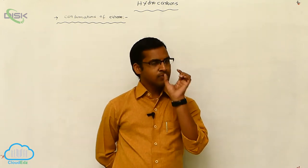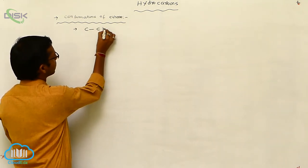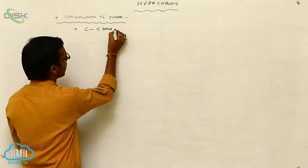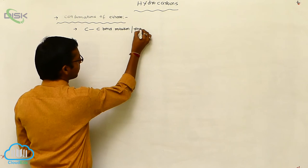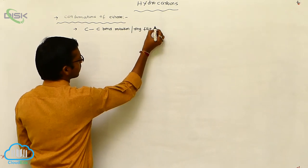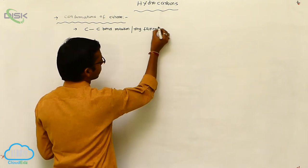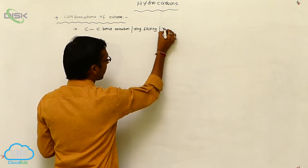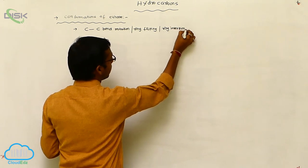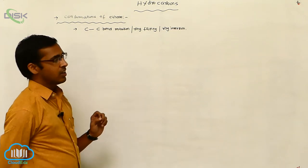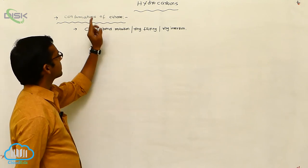Different forms are produced due to C-C bond rotation, ring flipping, or ring inversion process. In these three methods, different forms are produced, and those forms are called conformations.